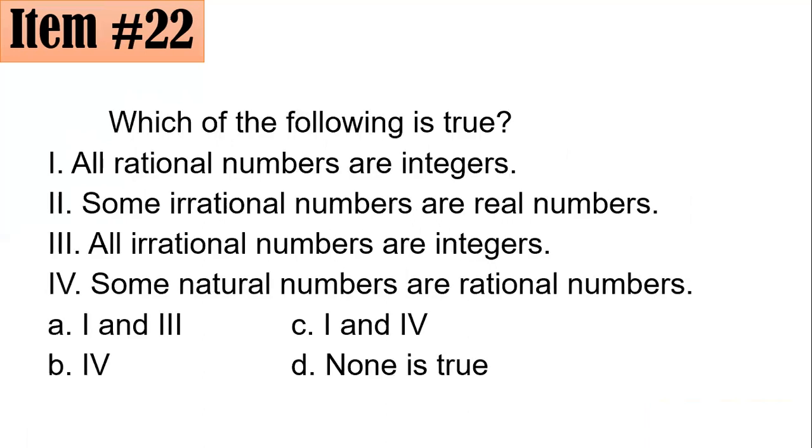Next number. Which of the following is true? One: all rational numbers are integers. Two: some irrational numbers are rational numbers. Three: all irrational numbers are integers. Four: some natural numbers are rational numbers. One and three, four, one and four, or none is true. Let's analyze each statement. All rational numbers are integers - this is false. It is because it should be some rational numbers are integers. Example: one half. One half is rational but it is not an integer. So one is false.